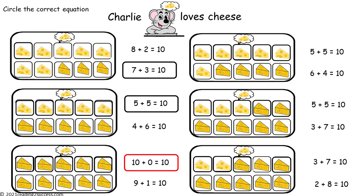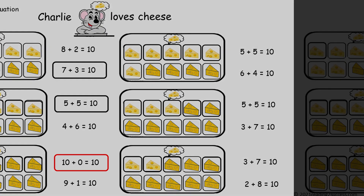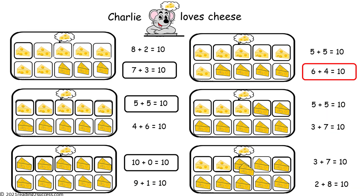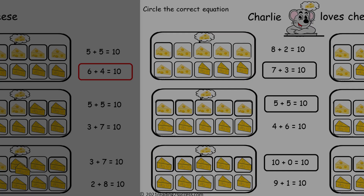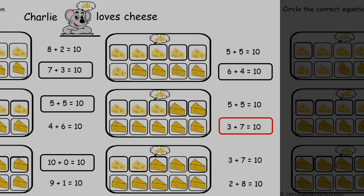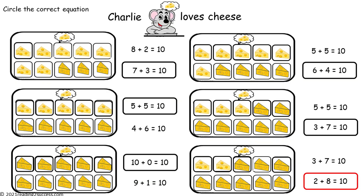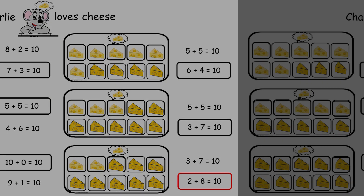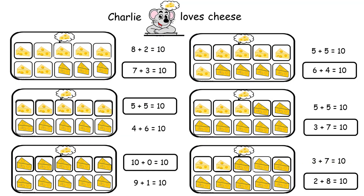Now have kids circle the correct equation. Examples include: 7 plus 3 equals 10; 5 plus 5 equals 10; 10 plus 0 equals 10; 6 plus 4 equals 10; 3 plus 7 equals 10; and 2 plus 8 equals 10. This is a completed example.